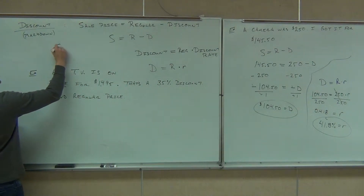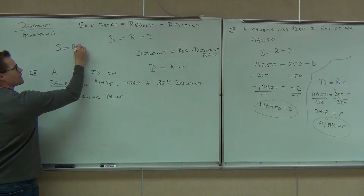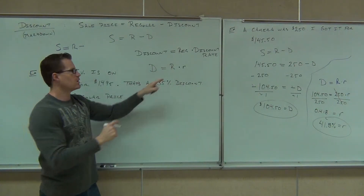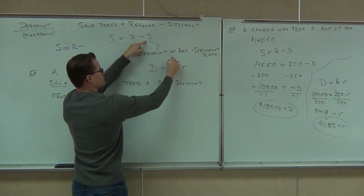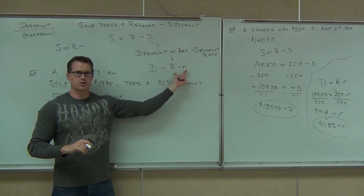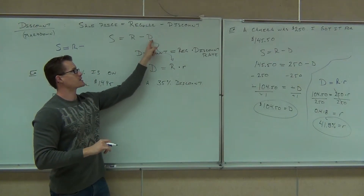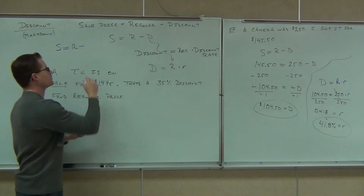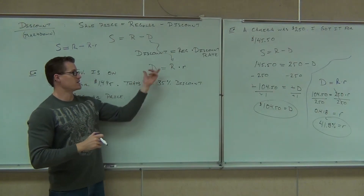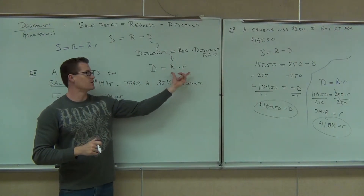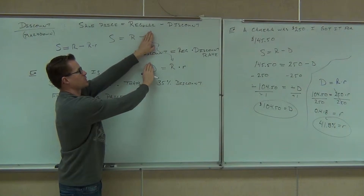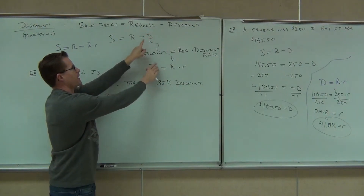Instead of s equals R minus d, notice how d equals R times little r. Instead of writing d, we can write R times little r instead. So instead of R minus d, I wrote R minus R times r. You believe me that d was R times r, right? So instead of d, what else can I put? R times r — that's the same d. I could write that instead of that, and that's exactly what I've done there.